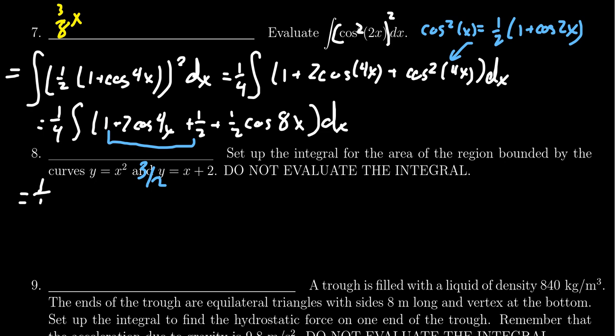So we're going to get one fourth the integral of three halves x. Next, we're going to get two over four sine of 4x. And then for the last one, you're going to get one half. One half times one eighth sine of 8x. Don't forget your constant there.